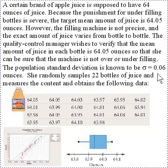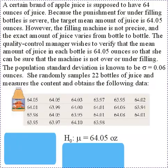Before you take your random sample, you are supposed to set up your hypotheses and decide on a significance level. The null hypothesis is the status quo where nothing unusual is happening. The null hypothesis always has the equality, so it has to be the population mean is equal to the hypothesized value of 64.05 ounces.